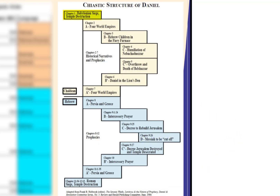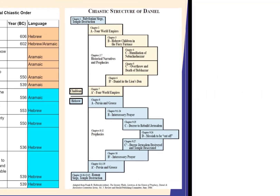The whole thing is wrapped from chapter 1 to chapter 11, talking about the Babylonian siege and the temple destruction, and in chapter 11 the Roman siege and temple destruction. The way this is arranged is a near-perfect chiasm based on topics, driven by language and by their historical or prophetic purpose.